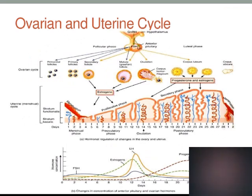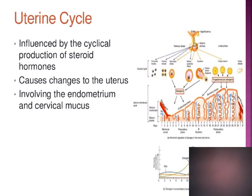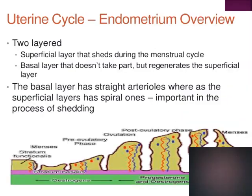This is a diagrammatic representation of the ovarian cycle, the changes in the uterus, and the various hormones responsible for those changes. The uterine cycle changes in the endometrium are influenced by the cyclical production of steroid hormones, and changes also occur in the cervical mucus. The endometrium has two layers: the superficial layer that sheds during the menstrual cycle, and the basal layer that does not shed but regenerates the superficial layer. The basal layer has straight arterioles, whereas the superficial layer has spiral arterioles, which are important in the process.